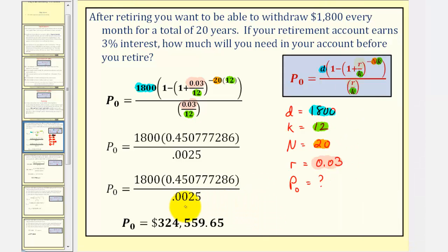This is the starting amount or balance you would need in your account to begin with, in order to withdraw $1,800 every month for 20 years if your account earns 3% interest.